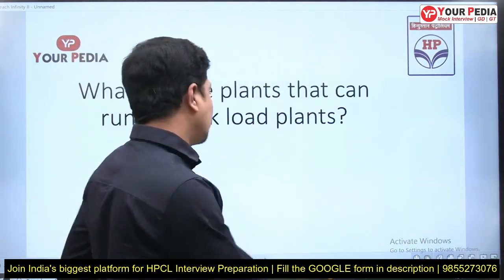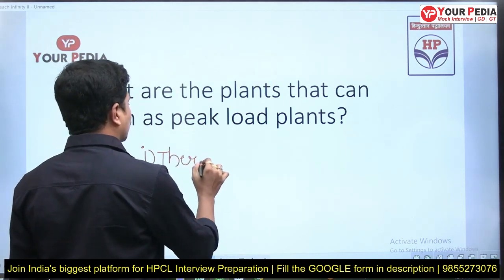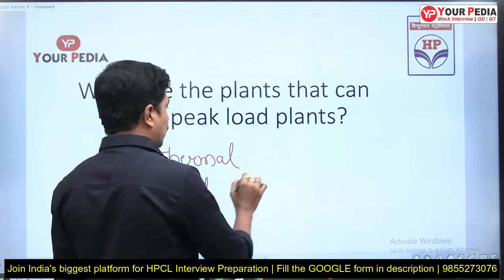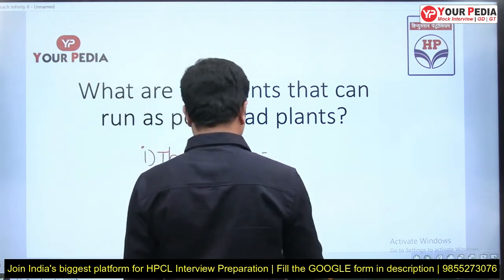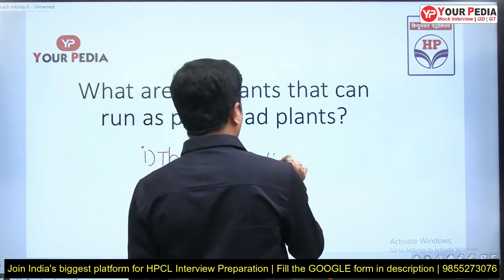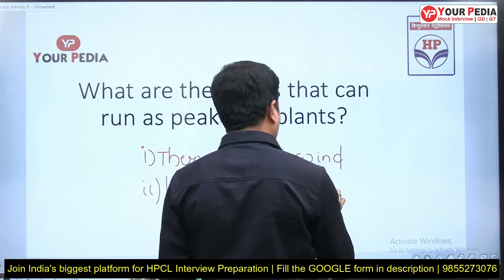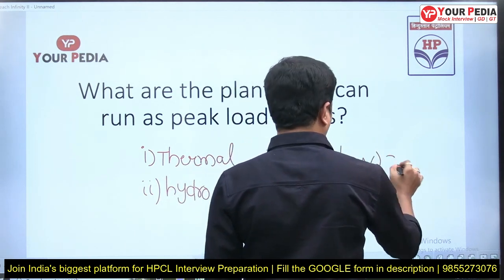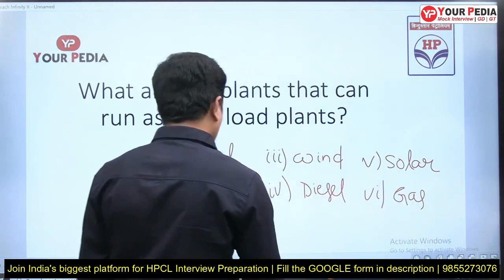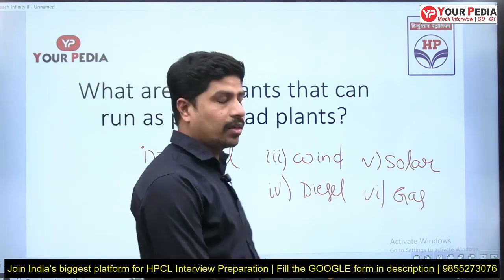First of all, what kinds of plants do we have? The types of plants we know are: thermal, hydel or hydro plants — hydro plants use water — wind, diesel, solar, gas — very important, gas power plants — and nuclear. So these are the general plants we know.